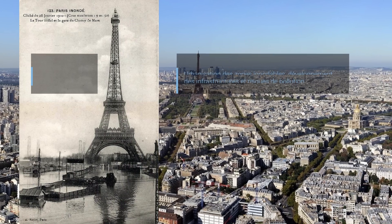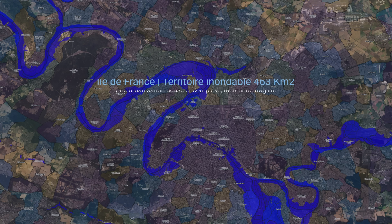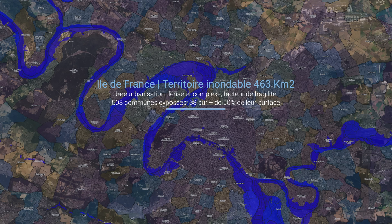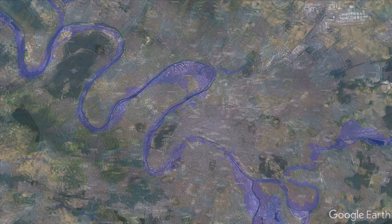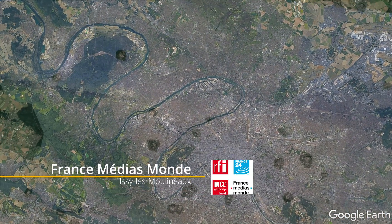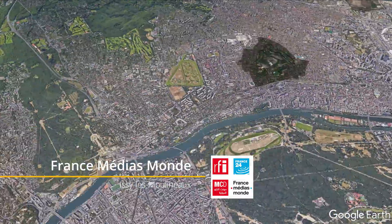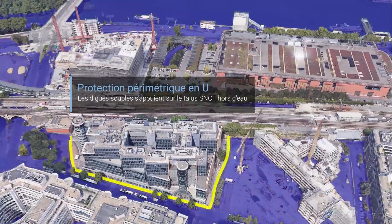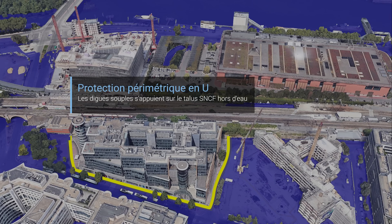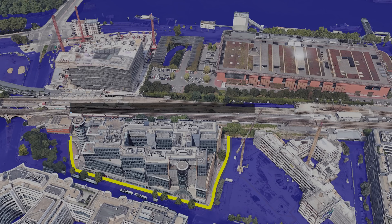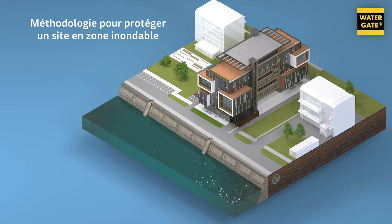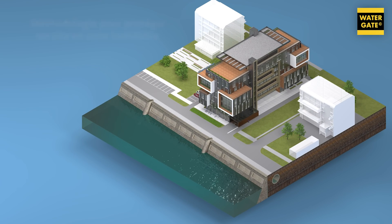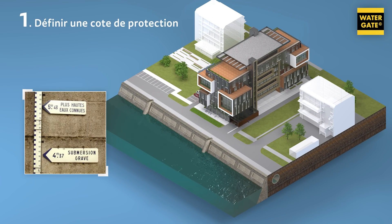Inondable. On commence par définir une côte de protection cible, au moins centenale.